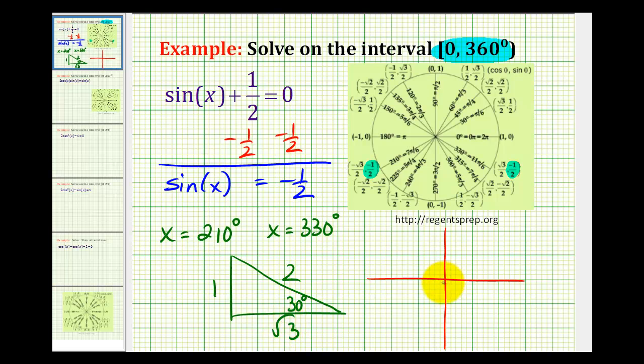So if we sketch a 30 degree reference angle in the third and fourth quadrants, these are the terminal sides of the angles that would have a sine function value of negative 1/2.